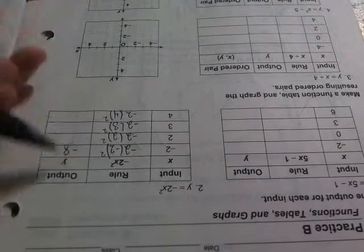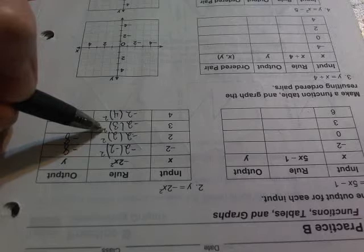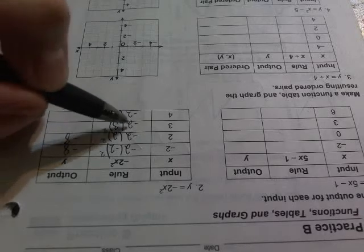In the next one, 2 squared, 2 times 2 is 4, times the negative 2 in front is also negative 8. 3 squared is 9, 3 times 3 is 9, times the negative 2 in front is negative 18. And the last one, 4 squared, 4 times 4 is 16, times negative 2 is negative 8. And that's how you fill out an input-output table.